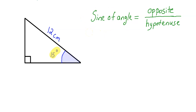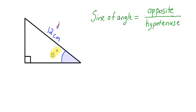I know that sounds confusing, but what it really means is the following. The sine of an angle just means that you take the length of the opposite side divided by the length of the hypotenuse. It's just a ratio. So the first thing you want to do is label your triangle, and I always find the hypotenuse first. The hypotenuse is always the longest side of a right triangle. Hopefully you can visually see this is the longest side — that's always your hypotenuse. So I'm going to call this H for hypotenuse right here. Its length is 12 centimeters.